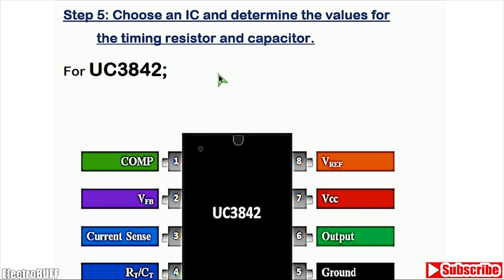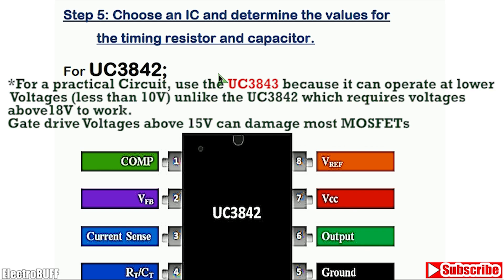The next step is to choose a suitable IC. You can use an IC you have or choose one that meets the required specifications. In this case I decided to go with the UC3842 because it simulates well. For a practical circuit, I recommend you use the UC3843 because it requires a lower operating voltage.